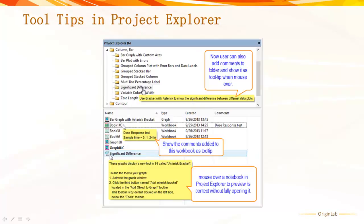Hovering the mouse over other window types will show useful information as tooltips as well. For example, when you mouse over a workbook, window comments will show as tooltips. And if you mouse over a notes window, the notes window contents will show as tooltips. Additionally, now comments can be added to folders in projects.